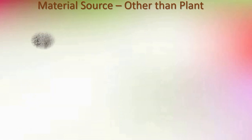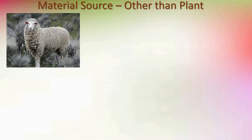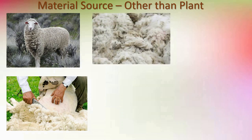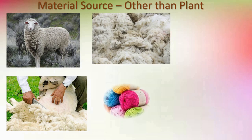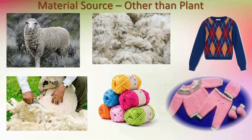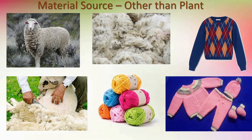One more non-plant source: here you can see a sheep. We take out the wool of the sheep and collect it. After processing this wool, we get woolen threads or woolen yarns. By using these threads we make different types of sweaters. This is called woolen cloth. It helps us to protect from severe cold and gives warmth to our body when we wear it. The source is the animal — that is sheep.